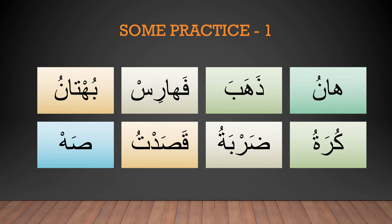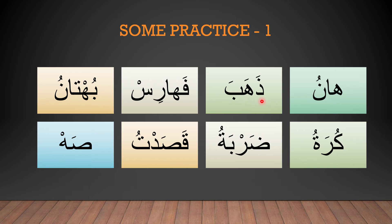Now let's do some practice. I'm going to do this twice — first time you listen, then pause the video and do it yourself. Ha-alif: Ha. Noon-damma: Nu. Ha-Nu. Notice the Ha here is in the beginning form because the letter before it is not connecting. Ha-ba-fatha: Ba. Ha-ba. Fa-fatha: Fa. Ha-alif-Ha. Fa-Ha. Ra-kasra: Ris. Ha-ris.